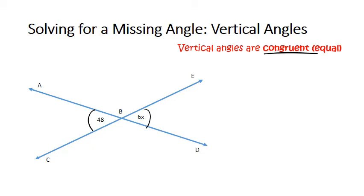So let's set up an equation first to solve for x. In this case we're going to have 6x equals 48, and I'm going to solve for x by doing 48 divided by 6, and that is going to give me my value for x, which in this case is 8. So x equals 8.